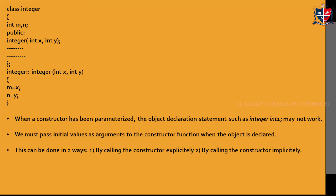Now we will see an example. Here we have a class called integer with data members M and N. In the public section, we have declared our constructor which has the same name as the class. This constructor accepts two parameters x and y of integer type, defined outside the class. The constructor is a member of the class integer, it accepts x and y, and using these parameters we initialize the data members M and N.